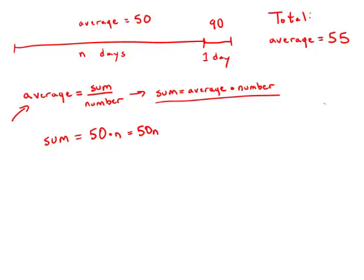We're going to add to that 50n plus the 90 that we produce on the final day. This should equal the total average times the total number of days, which is n plus 1. So we get this equation: 50n plus 90 equals 55 times (n plus 1).